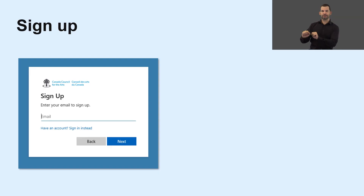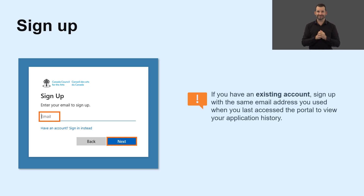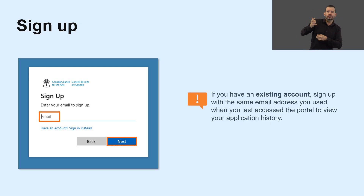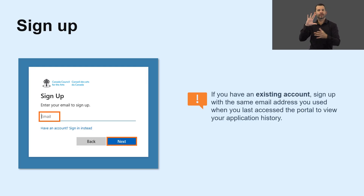That brings you to the Sign Up page, where you'll enter your email address and click on Next. If you have an existing account, sign up with the same email address you used when you last accessed the portal, to ensure that your previous information, including your application history, appears in your new account. If you prefer to use a different email address, create your account with a new email, then use the Help feature to reach out to Council staff, who will link your previous account information to your new one.